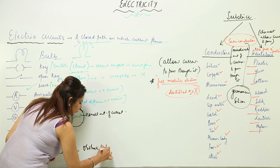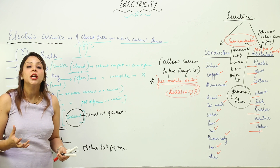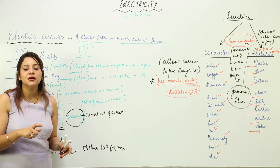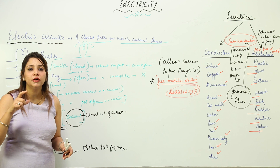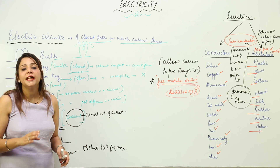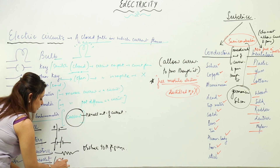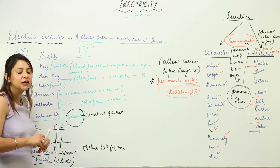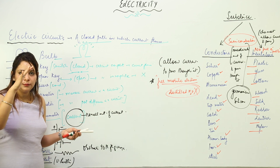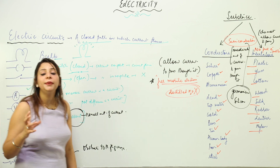Resistance is the obstruction to the flow of charge. It is similar to driving a car on a busy road — you cannot drive smoothly because of collisions between cars, and that obstruction is the resistance. Every conductor or appliance has resistance, ranging from high to low. A rheostat has variable resistance, meaning we can change it. If we need more current, we lower the resistance of the rheostat; if we need less current, we increase it.